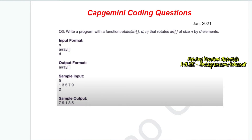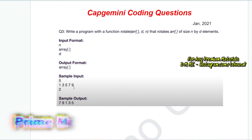The sample input is: 5 is the number of elements, and the elements are 1, 3, 5, 7, 9. Then 2 is the number of times you have to rotate the array.